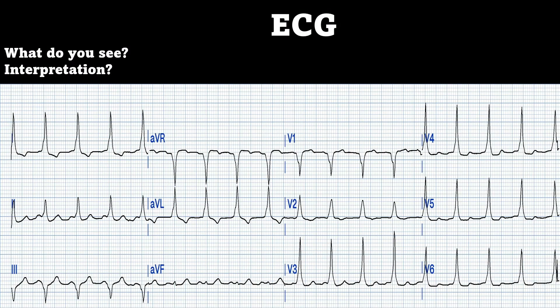Here's his EKG — what do you see? Pause the video and see if you can determine your own interpretation of the rhythm. What I see is a rate around 105 beats per minute. I'm a lazy person with regular rhythms — I always try to use the big box method to determine the rate. I have some arrows pointing to some weird morphologies in V1, AVL, and V5. You can also see them throughout in lead two, V4, and V6. There's a little blip at the very beginning of each QRS complex. There is a short PR interval and up-slurring of your QRS complex. This makes me think the patient has Wolf-Parkinson-White syndrome, which is the pre-excitation syndrome.